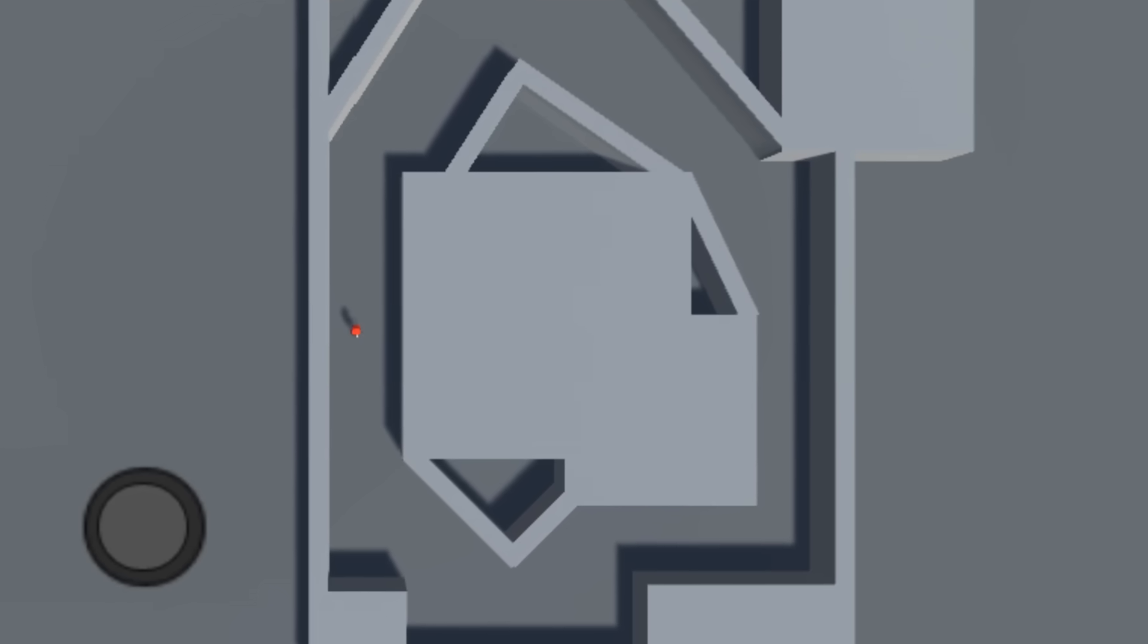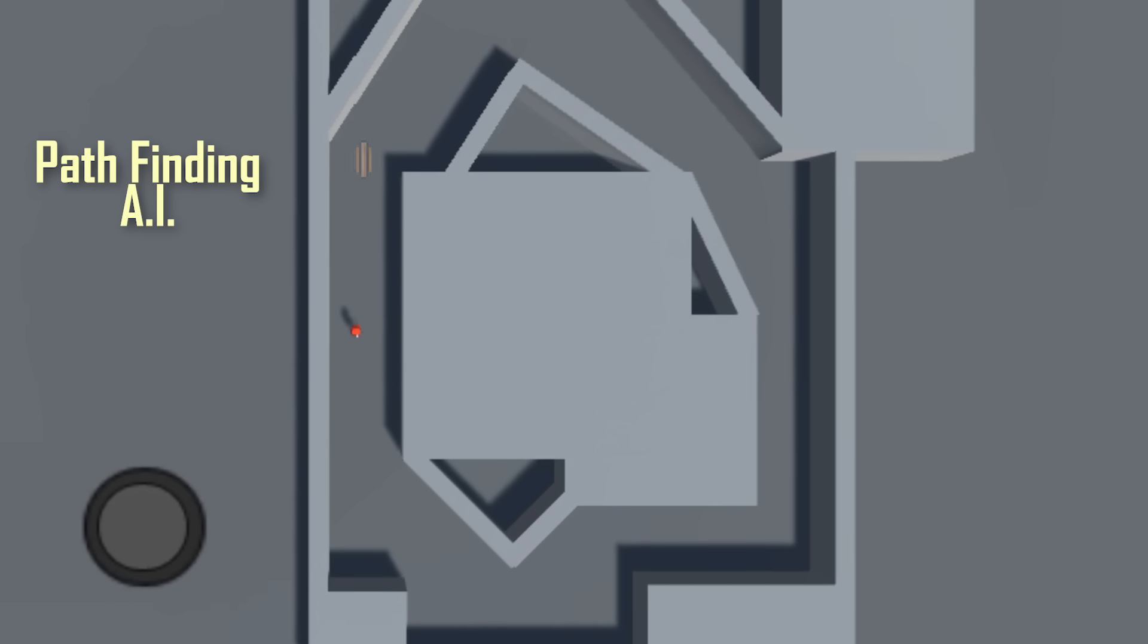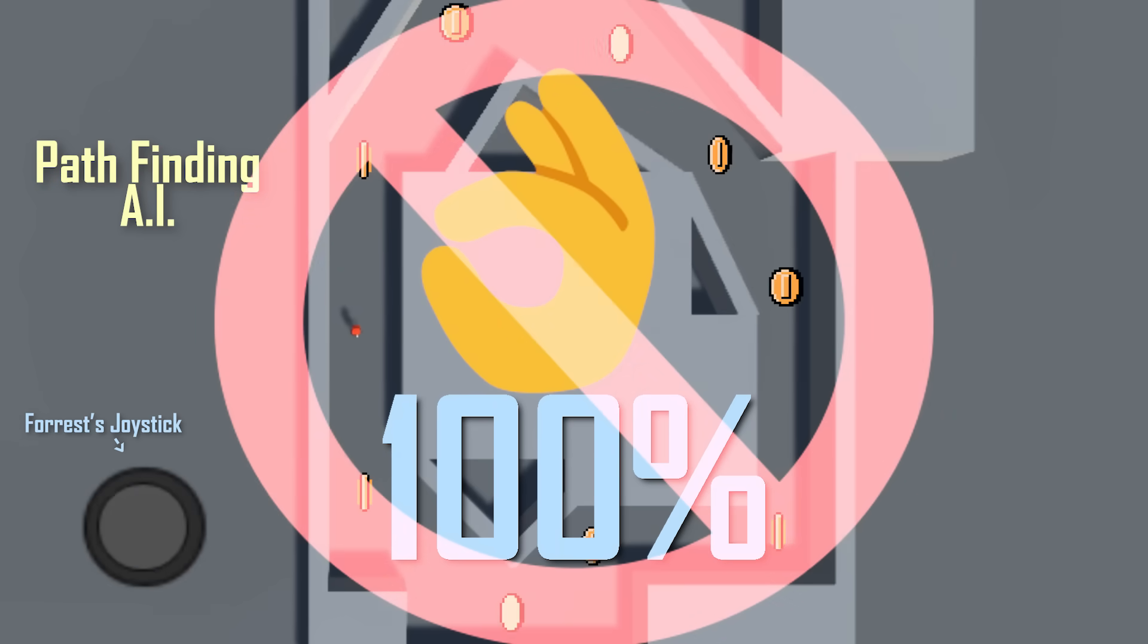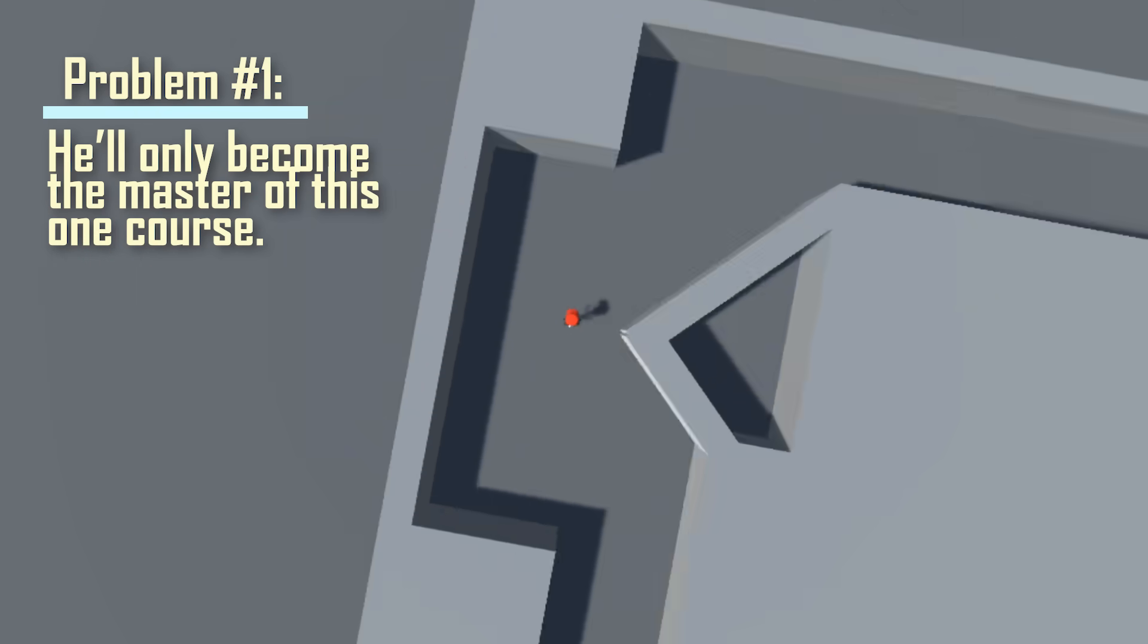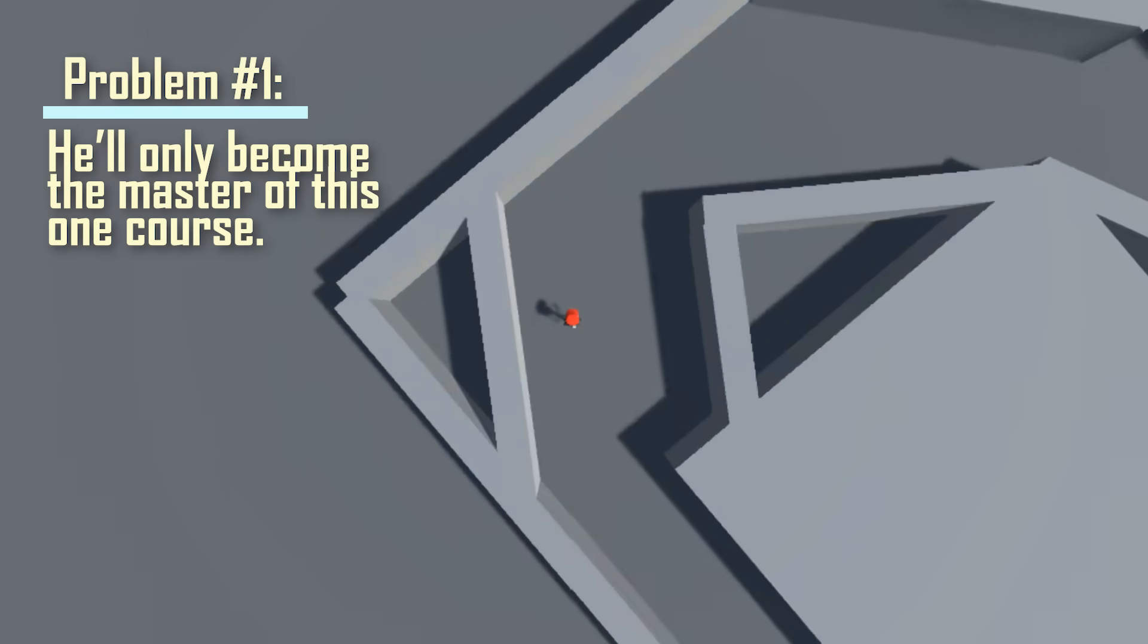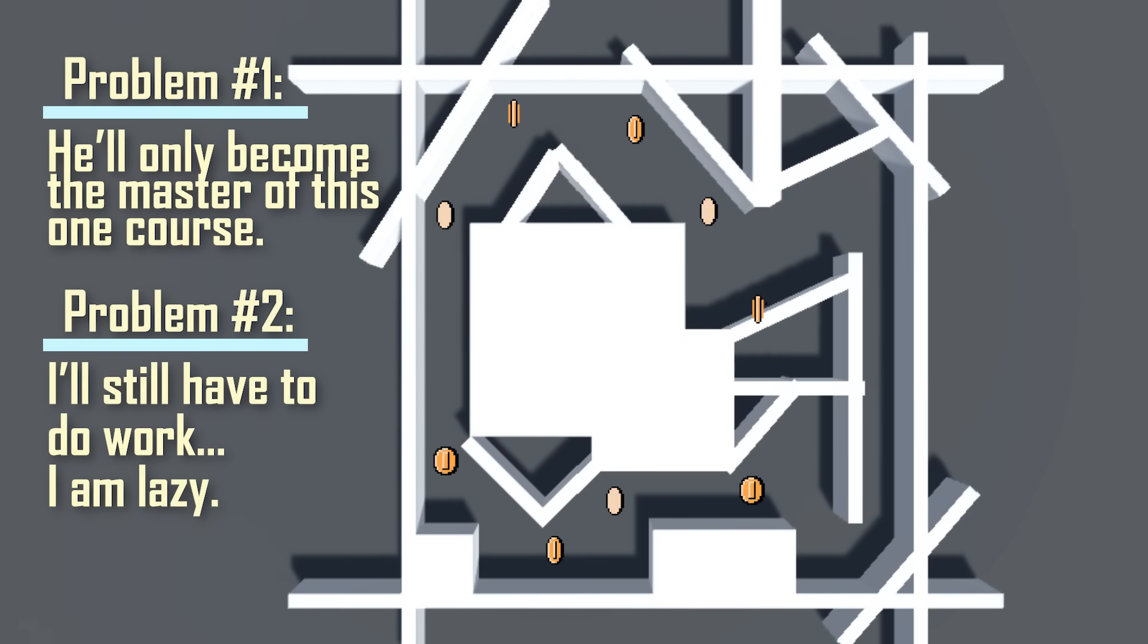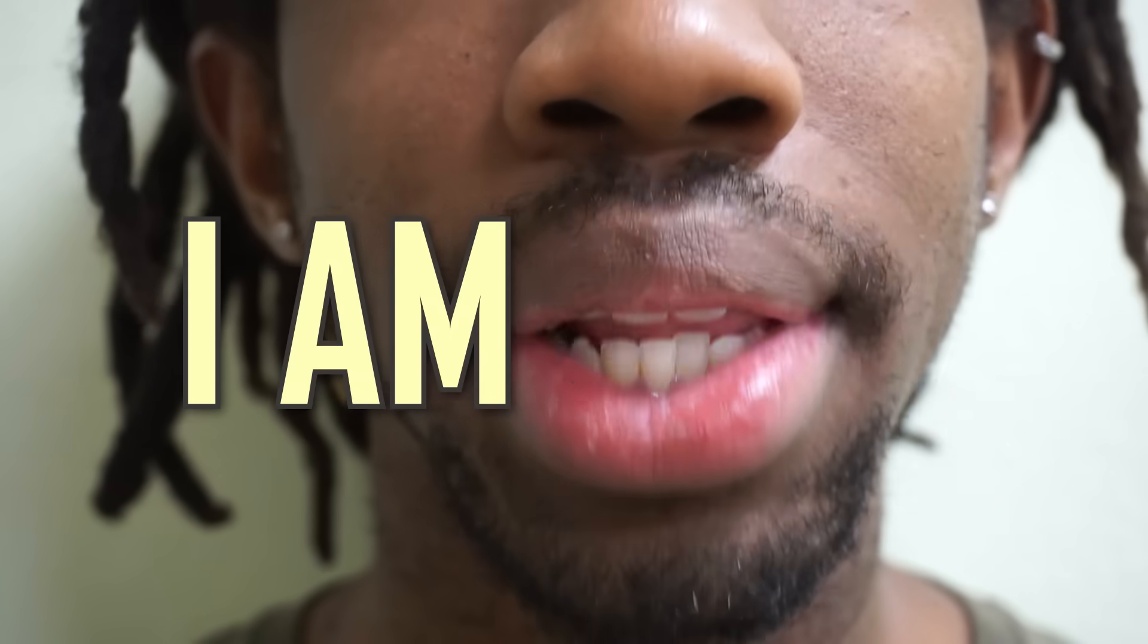One simple AI we can give Forrest is some sort of pathfinding AI. We'd place a bunch of markers on the course and tell Forrest to tilt the joystick left or right depending on where the next marker is in relation to him. And 100% this will work. But it also comes with a few problems. One, with this solution he'll only become the master of this one course. And two, I'll still have to do a lot of work placing these markers for every new course. And let me remind you guys. I am lazy.